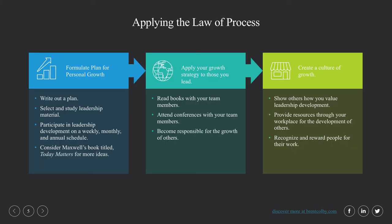So how do we apply this law of process? Maxwell suggests three main ways. First, he says we need to formulate a plan for personal growth — actually get out a pen and paper and write out a plan. These plans will look different for everyone: some complex, some simple, but you need to write it out. There's something powerful about being formal and putting it on paper. Once you have a plan written out, you can evaluate it, assess it, and select study and leadership material to accomplish that plan.